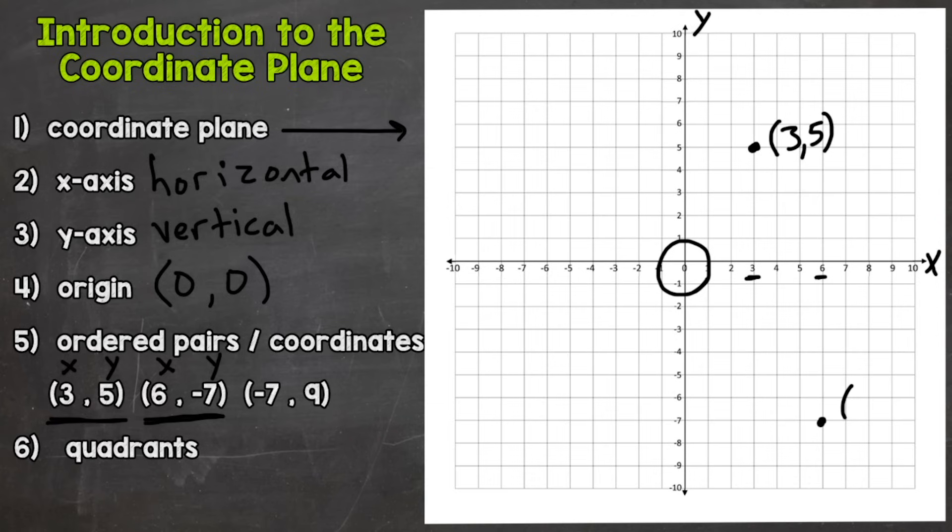Lastly, we have (-7, 9). Again, x always comes first followed by y. This time we're going to go left of zero because that's a negative 7—negative 7 is over here. Then our y is a positive 9, so we're going to go up, plot our point, and I'll label (-7, 9). So again, always side to side and then up or down.